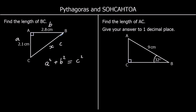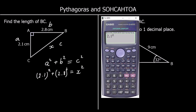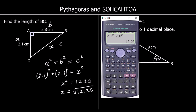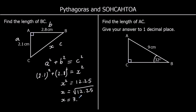The longest side is called the hypotenuse, and it's always opposite the right angle. So in this question, we can say 2.1² + 2.8² = x². If we type 2.1² + 2.8² into the calculator, we get 12.25. So x² = 12.25, meaning x = √12.25 = 3.5. So x is 3.5 centimetres.